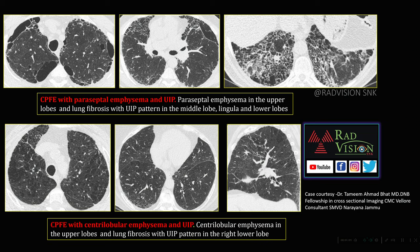In CPFE, you can have centrilobular emphysematous changes or paraseptal emphysematous changes in the upper lobes, and UIP or NSIP patterns in other parts of the lungs, especially in the middle and lower lobes.